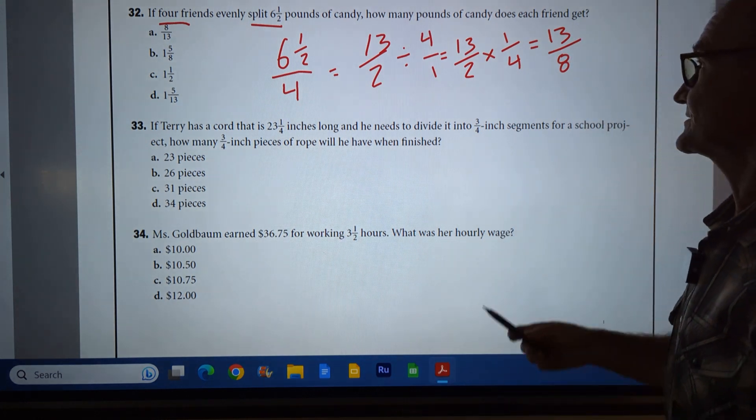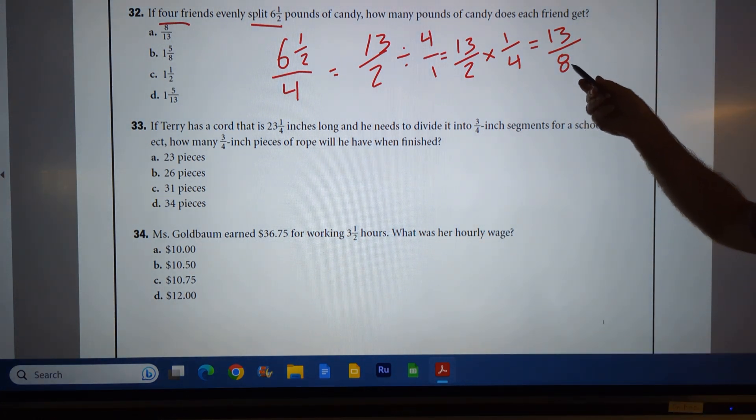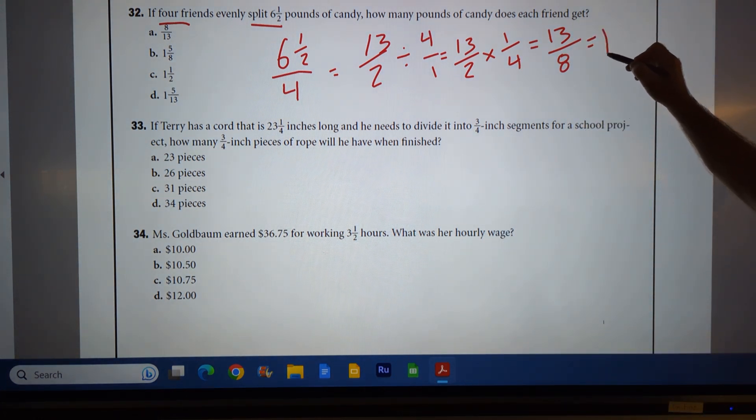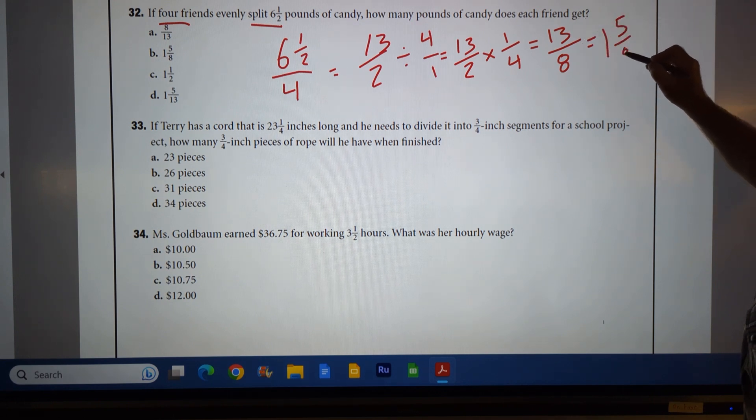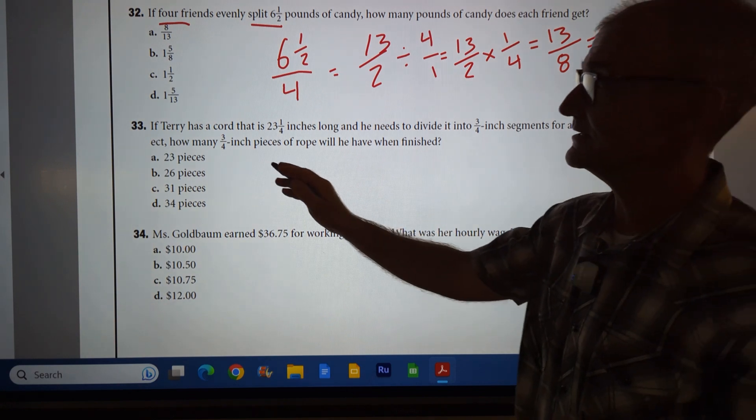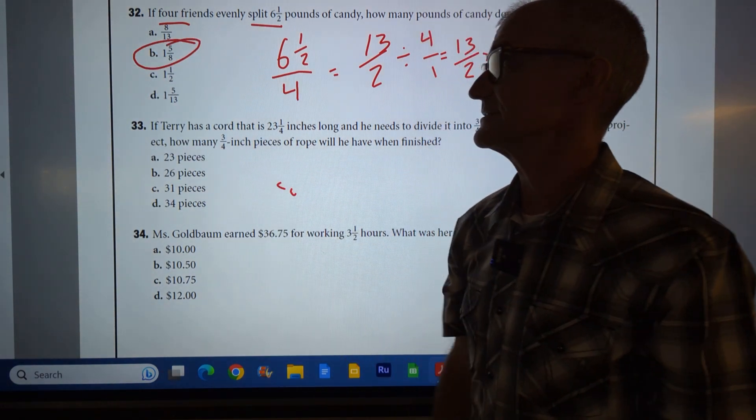I look over here. I don't see it there, so I'm going to turn it into a mixed number. Eight goes into 13 one time. 13 minus eight is five, so it gives me one and five-eighths. I look over here. Correct answer. Answer B.